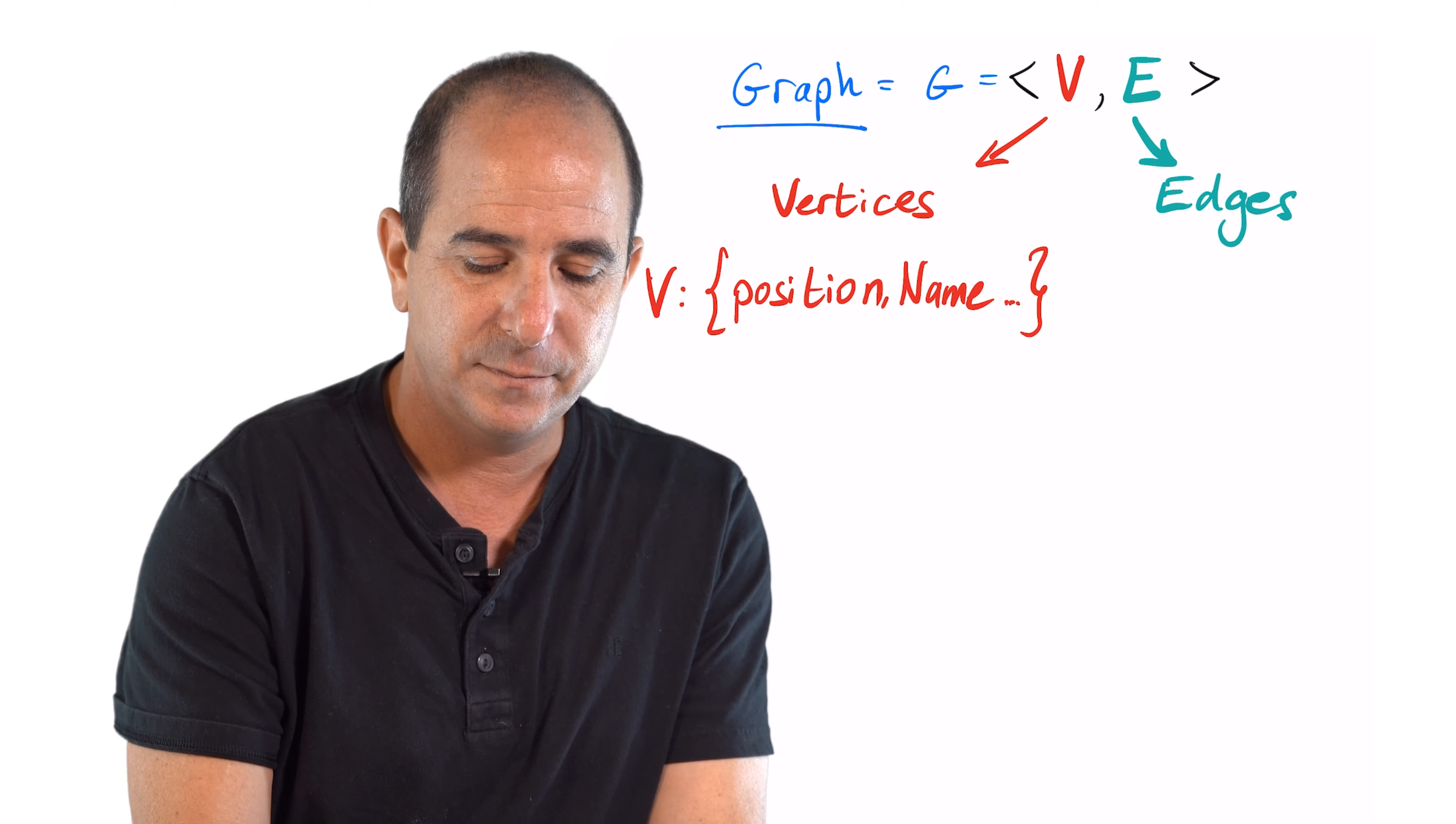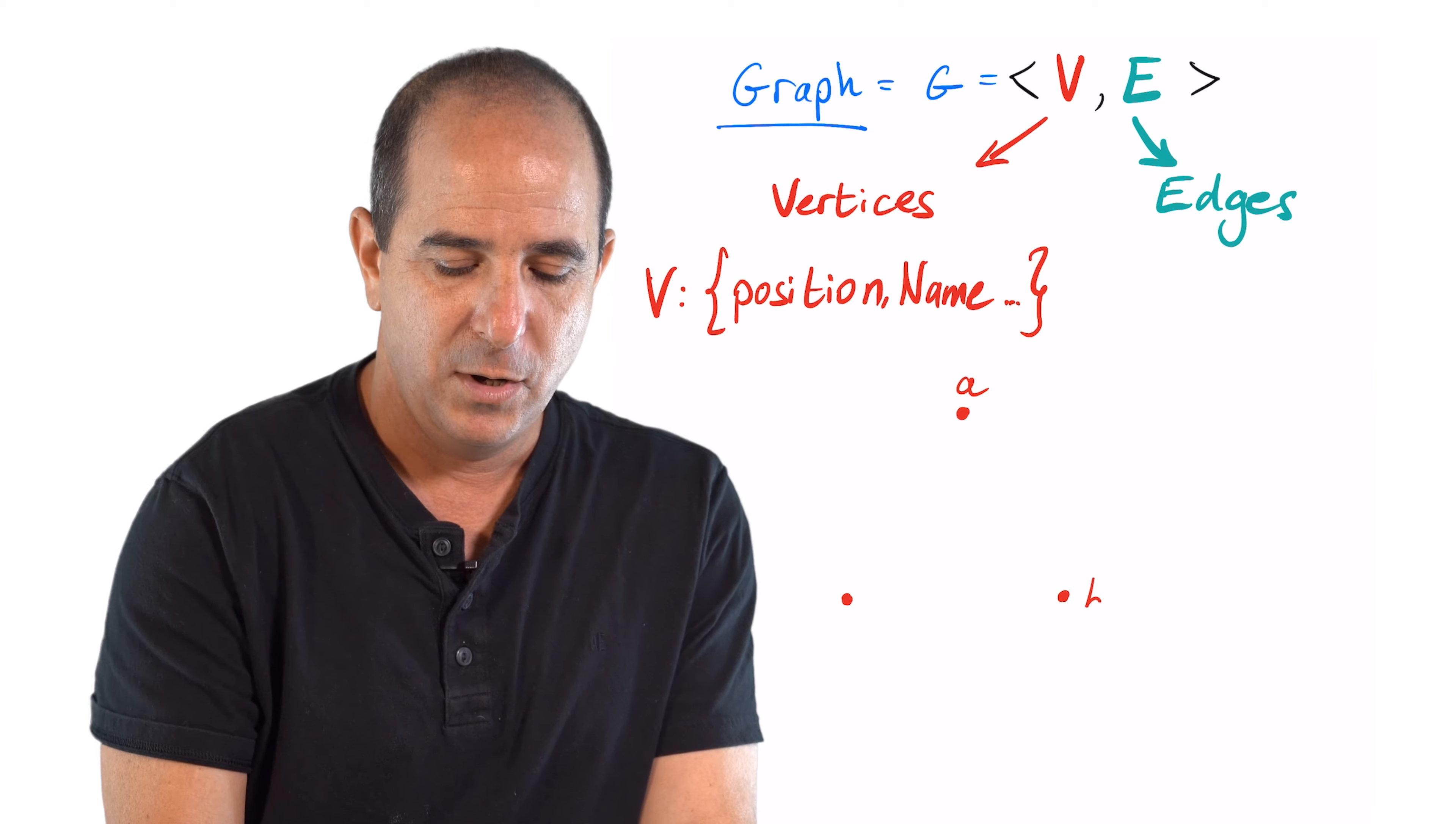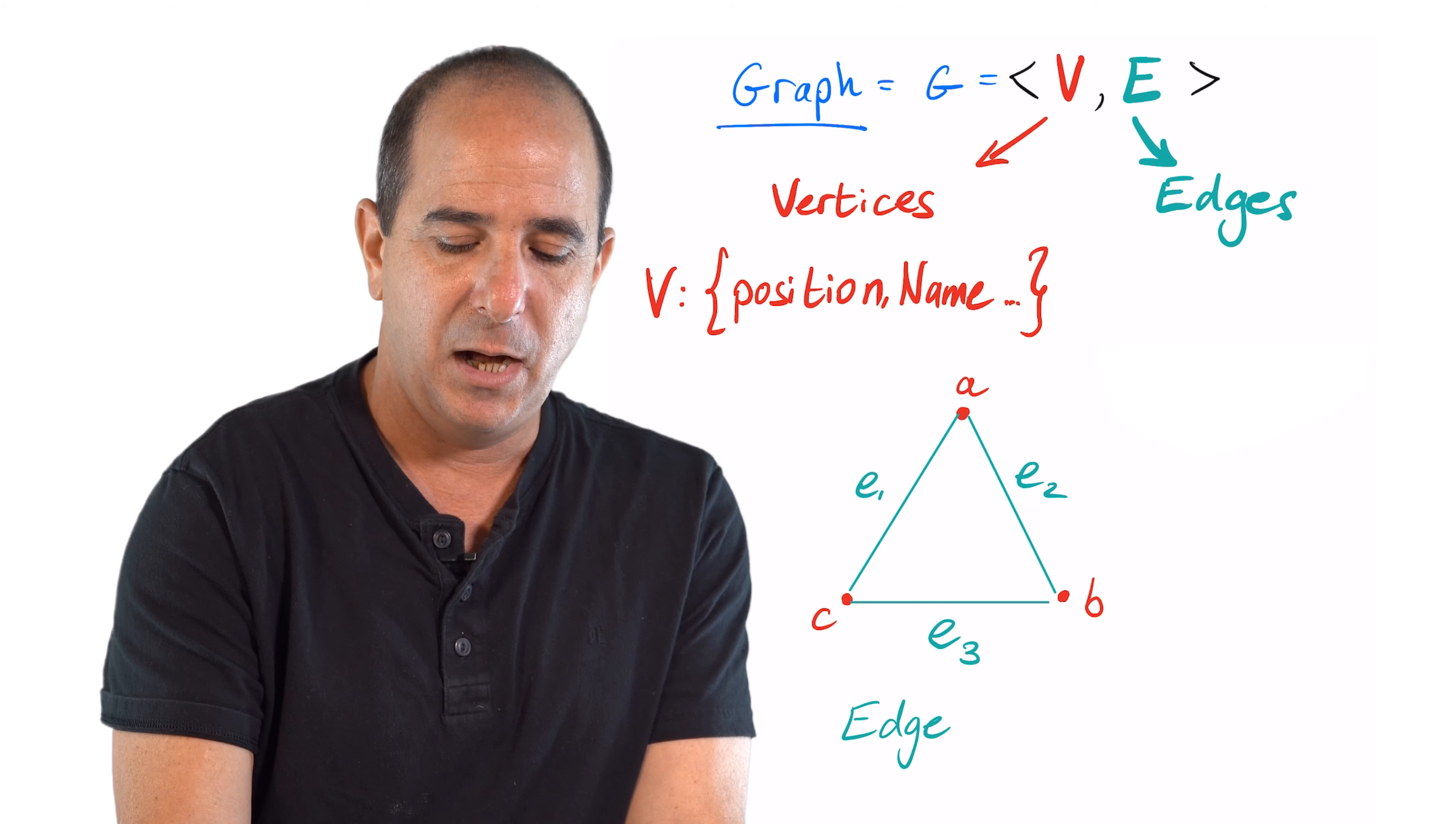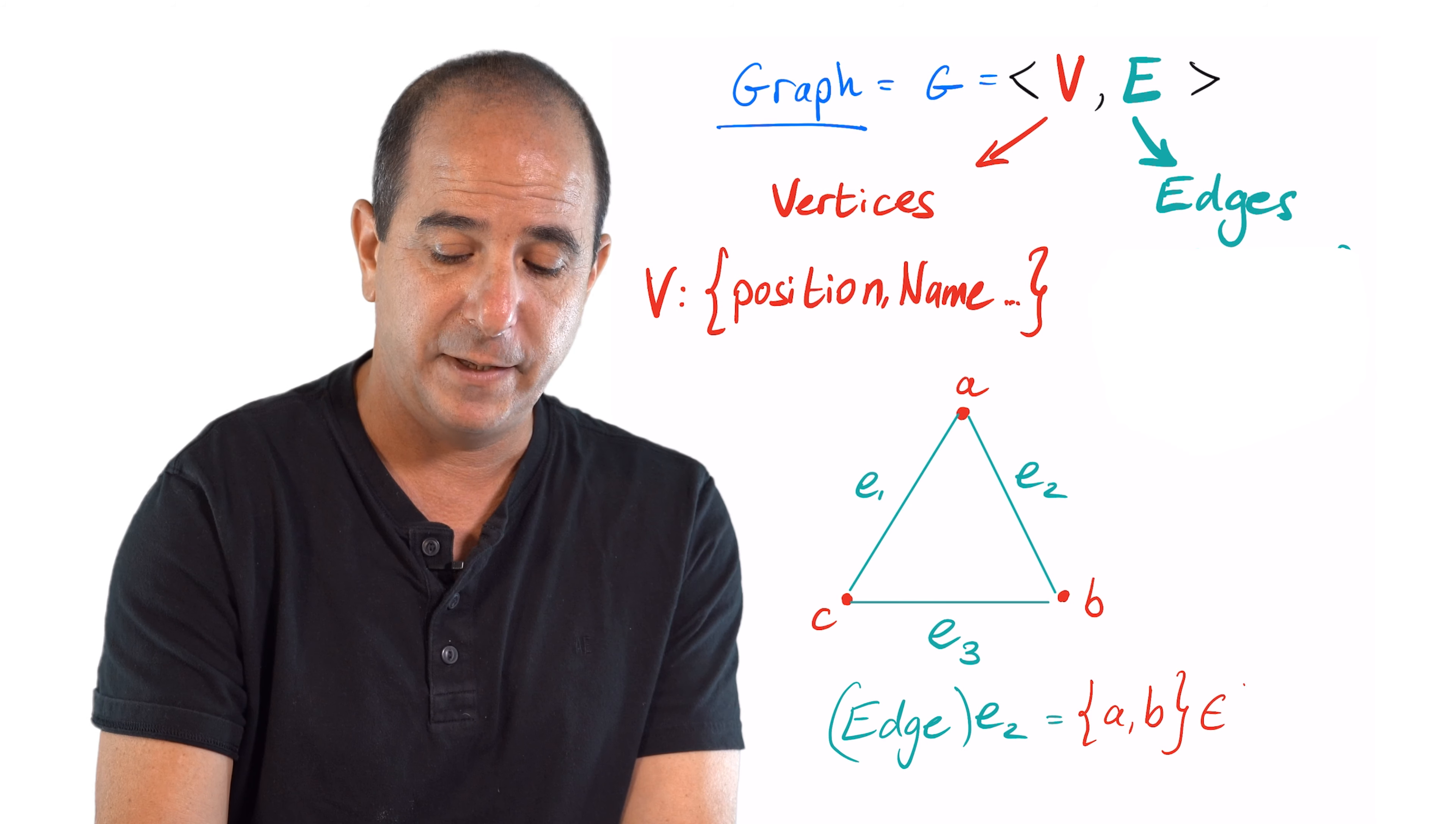An edge will be defined by the two nodes it connects. Commonly, we think of an edge to be defined by a pair of nodes, A and B, each of them belonging to V.